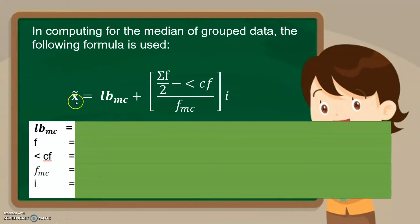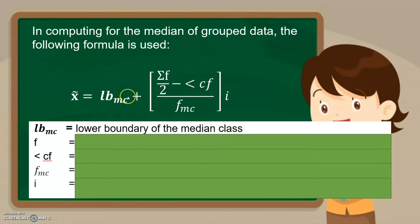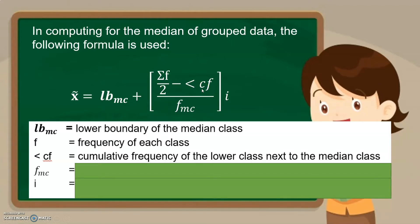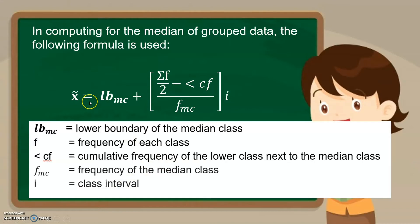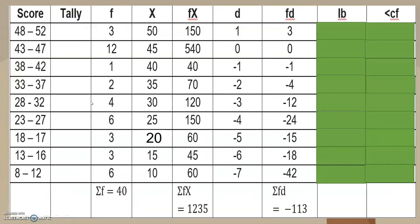We have the mean is equal to—let us first identify the meaning of each variable. The first one, we have the lower boundary of the median class. And then we have the f, which is the frequency of each class. We have less than cf, which is the cumulative frequency of the lower class next to the median class. And we have the frequency of the median class. And of course, we also have the class interval. So, I want you to remember the formula for the median.